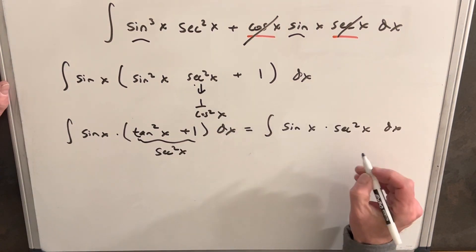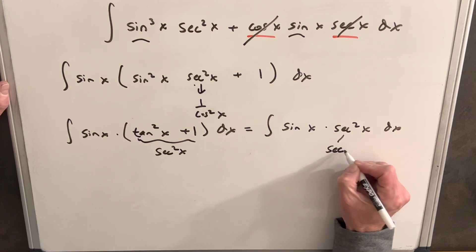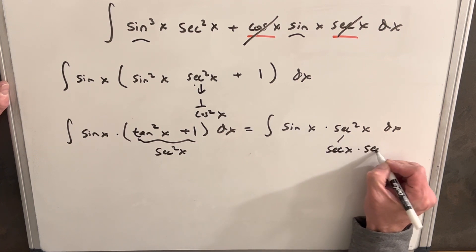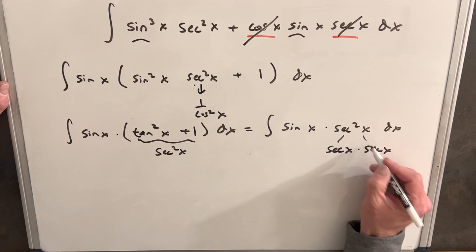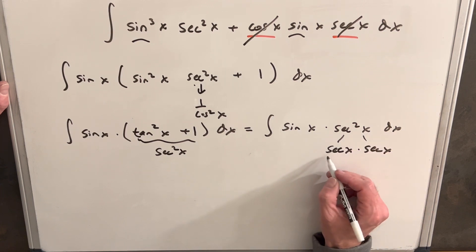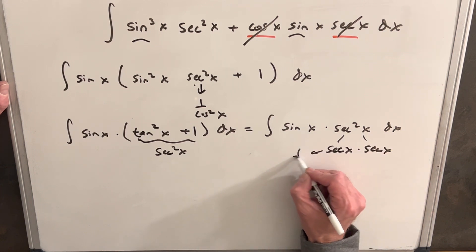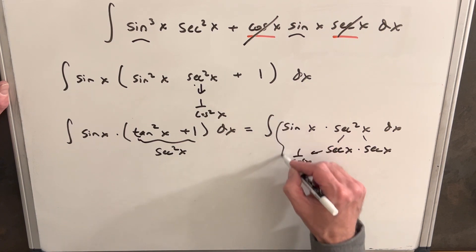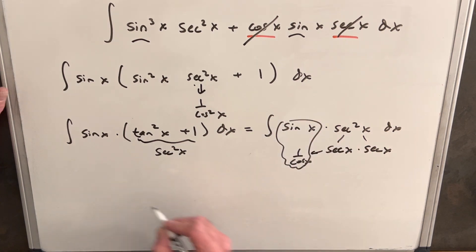Next, what I can do is let's take the secant squared, and we'll split this up as secant times secant. And then what I'll do is I'll take one of them, and I'll write it over here as a 1 over cosine x, pairing it up with sine x. This is just going to be tan x.